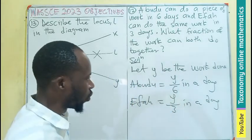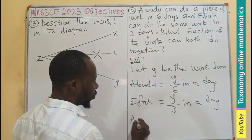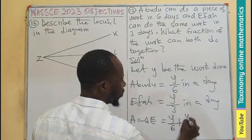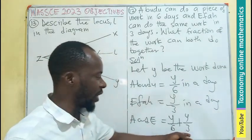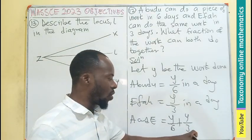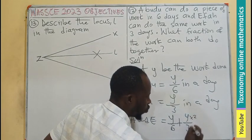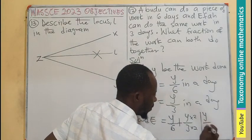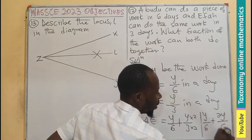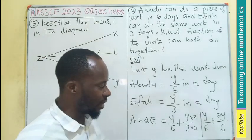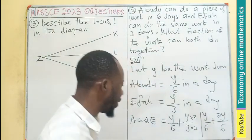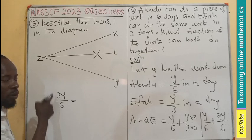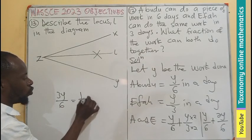They are doing the same work. This person does it in 6 days, this person in 3 days. So the work done together in a day, Abudu and Effa's work, will be y/6 plus y/3. This is a fraction with a common factor. Multiply here by 2 to have the same denominators, giving y/6 plus 2y/6, which equals 3y/6.